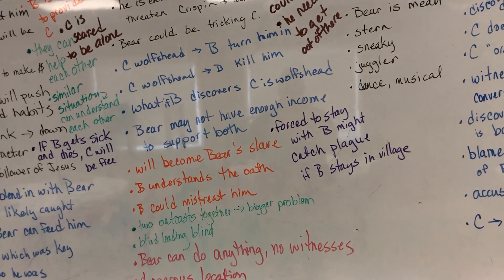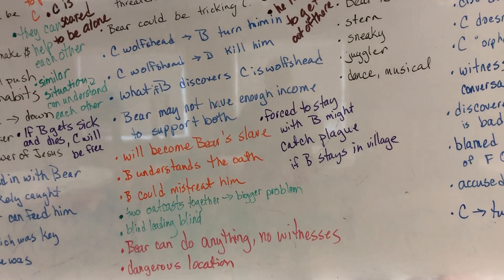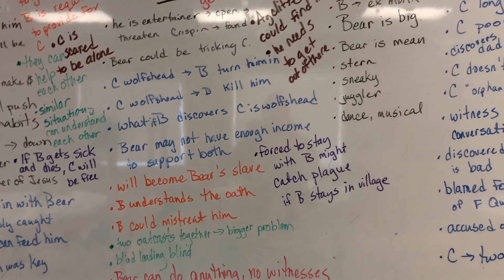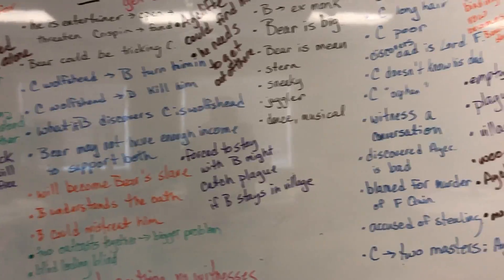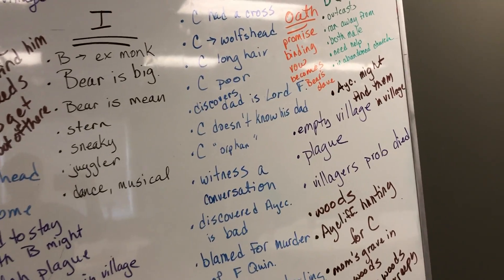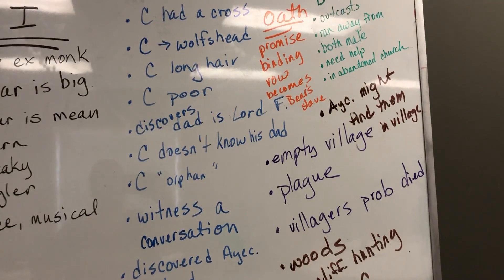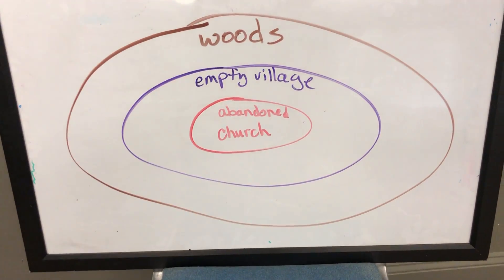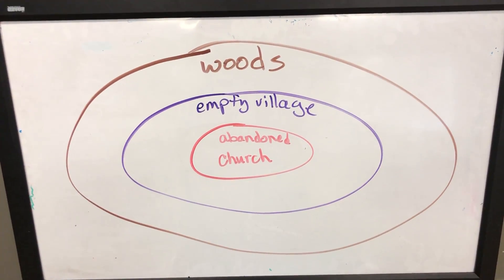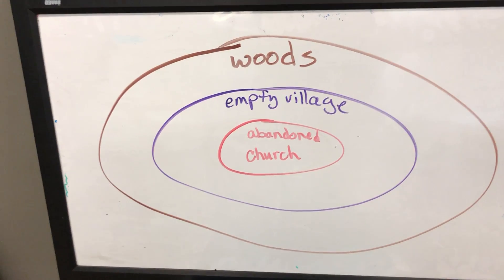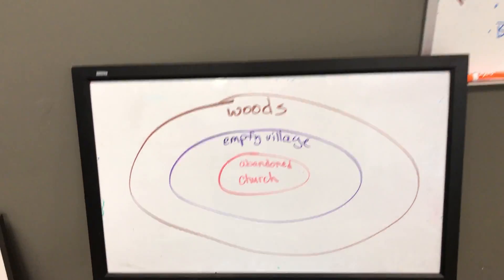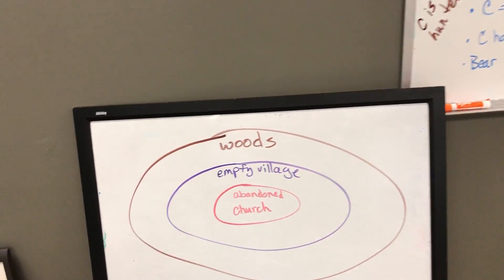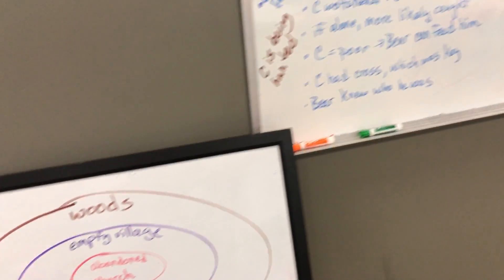Then we decided to get into talking about circumstance. We just didn't get to the part of the conversation where we talked about how they were different from one another. We talked about circumstance and how we zero in to literally location — what's going on in our different locations. We started with the fact that where are Bear and Crispin at this time? They're in an abandoned church. So then we just started thinking about that.